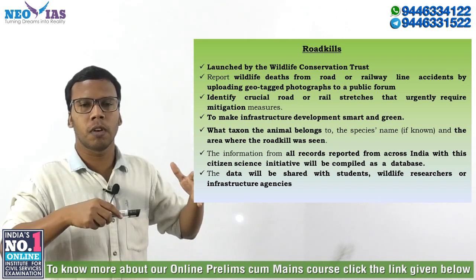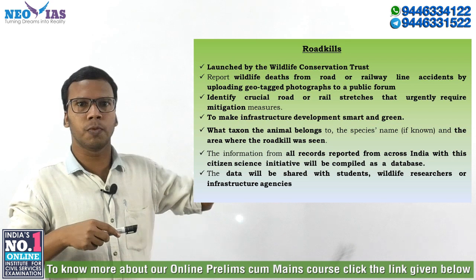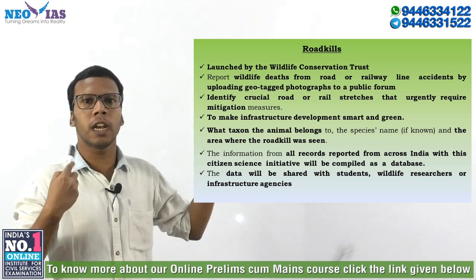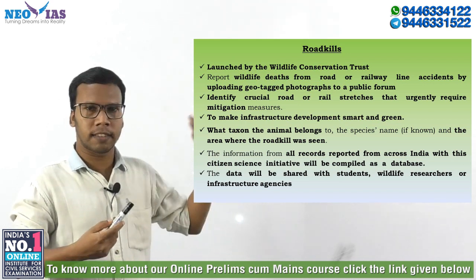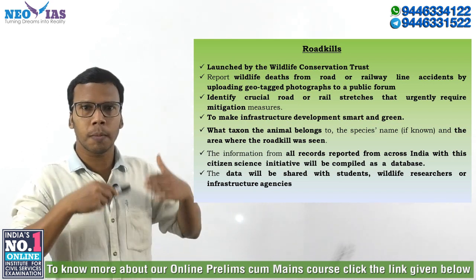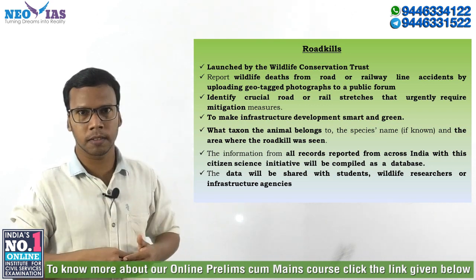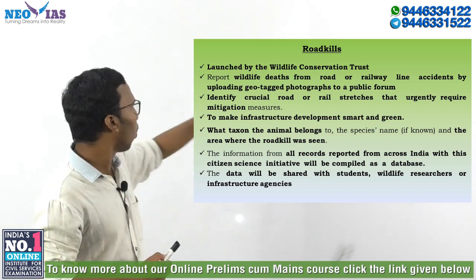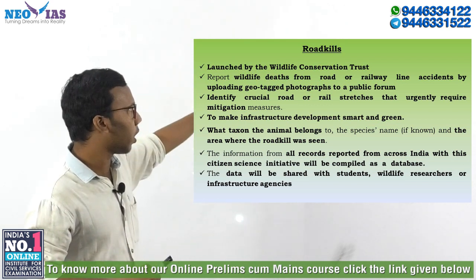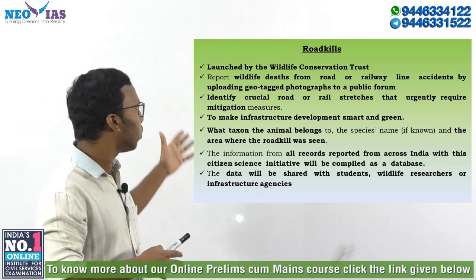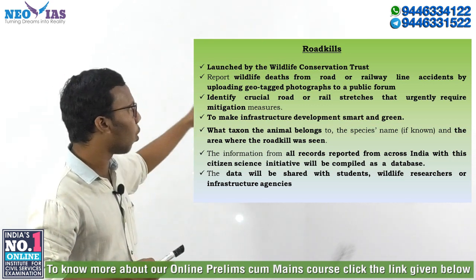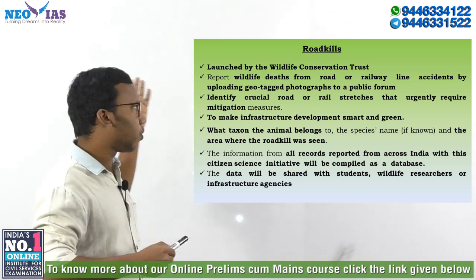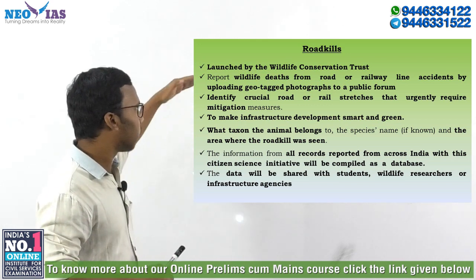By this, we will have a database of road accidents and the animals which have been killed. By analyzing all the gathered data, we can identify the areas where the maximum number of accidents have happened, and thereby take mitigation and preventive measures. The RoadKills application helps citizens report wildlife deaths from road or railway line accidents by uploading geotagged photographs to a public forum, and this data can be used to identify crucial road or railway stretches that urgently require mitigation measures. This will help create a win-win solution for wildlife, making infrastructure development smart and green.